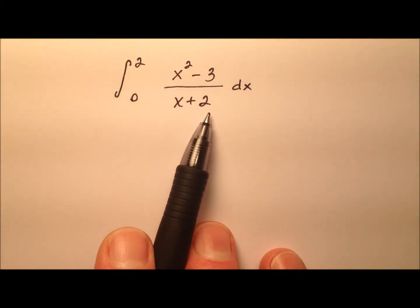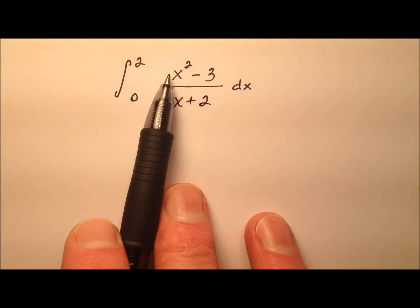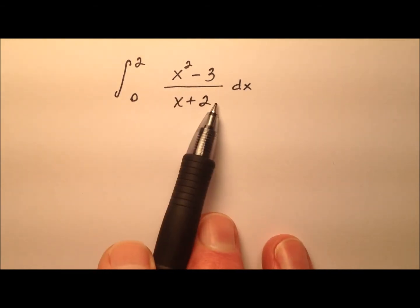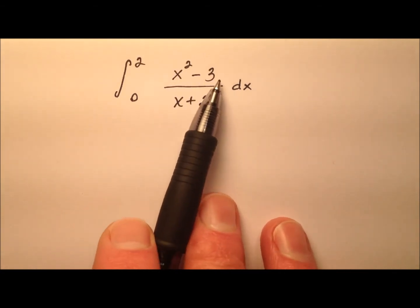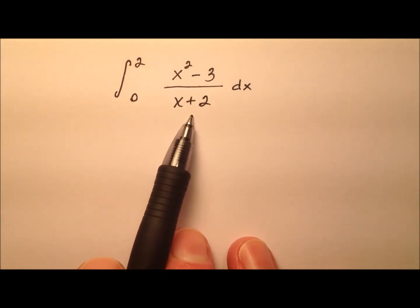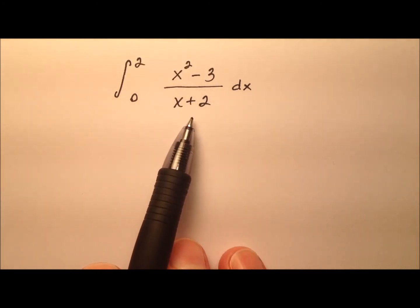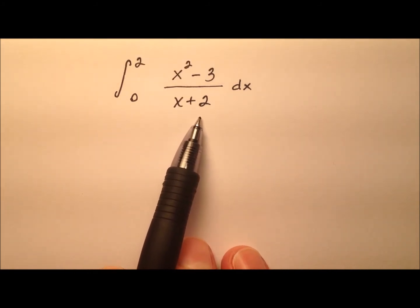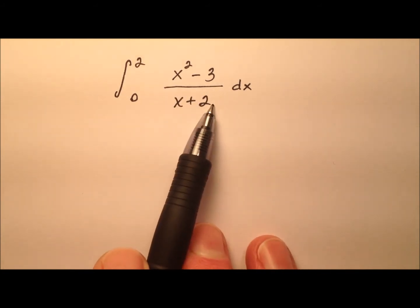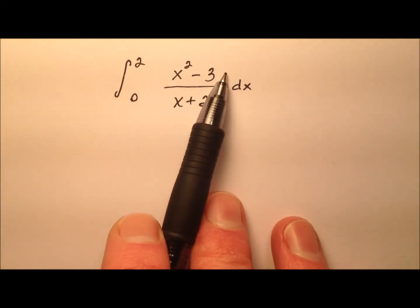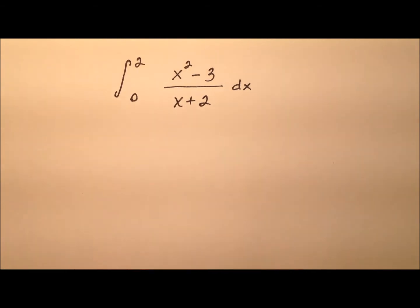Taking a look at this integrand, we have a rational expression — a polynomial in the numerator and a polynomial in the denominator. It appears there's not really a great u-substitution that would take care of this and give me something easy to integrate. So instead, let's consider actually doing the division — taking this numerator and dividing it by this denominator.